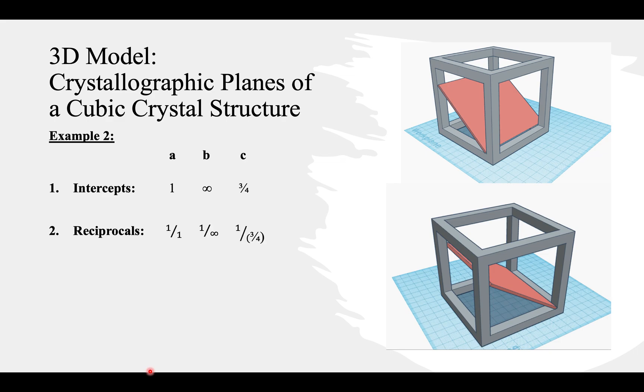So then taking the reciprocals and reducing, we now have 1, 0, and four-thirds. Since we have a fraction, we need to reduce by multiplying by a common factor, which would be 3. So doing that, we get 3, 0, 4, and then putting all of that into parentheses, we then have our Miller indices at 3, 0, 4.